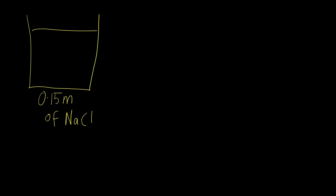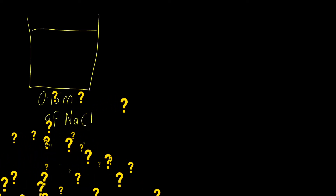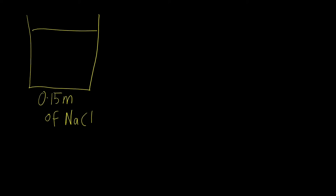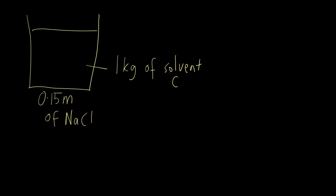Based on the molality definition, it means that in 1 kg of solvent — in this case most likely water — 0.15 mol of sodium chloride solute has been added in order to prepare this 0.15 molal sodium chloride solution.